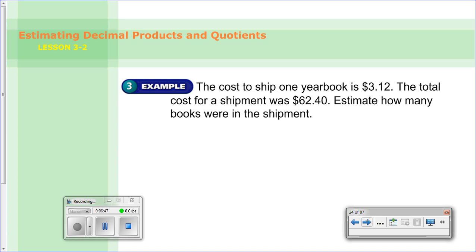Alright, so here we have example 3 here. The cost to ship one yearbook is $3.12. The total cost for a shipment was $62.40. Estimate how many books were in that shipment. So we know we're talking about books and there were so many shipped. At this point, we don't know how many were shipped. But the total cost was $62.40. And the cost to do one yearbook is $3.12. Go ahead and divide those out using compatible numbers. Because again, they're telling us to estimate.